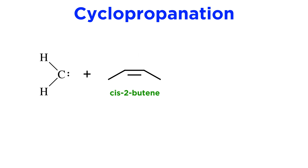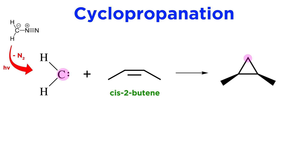Take for example the reaction of the methylene carbene with cis-2-butene. The carbene is prepared in situ — in this case from diazomethane, simply in the presence of light — and this will be the slow step of the reaction since carbenes are highly reactive once formed. The carbene will then insert itself into the pi bond to generate the three-membered ring, and in doing so the stereochemistry of the alkene is retained.